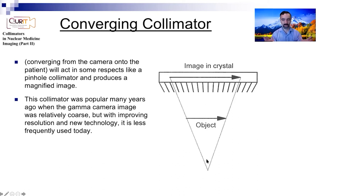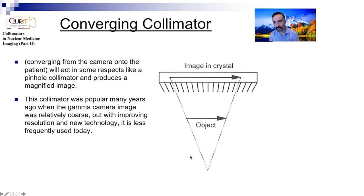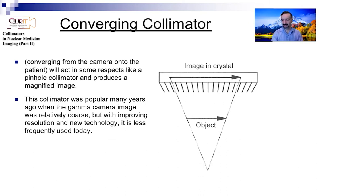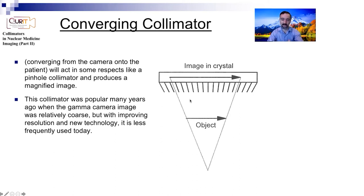A converging collimator does magnify the image and give you very good resolution, but it's a small area, and for whole body applications, you've got to scan the whole body, which is very time consuming. Multi-pinholes have solved that problem in some way, because you don't just have one collimator - you have multiple coming at the body from different angles to increase sensitivity.